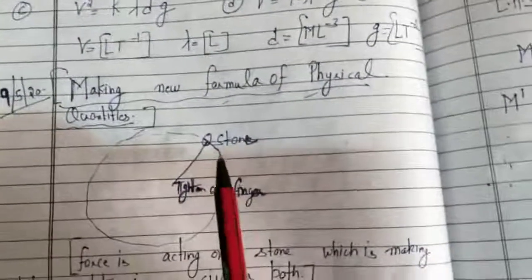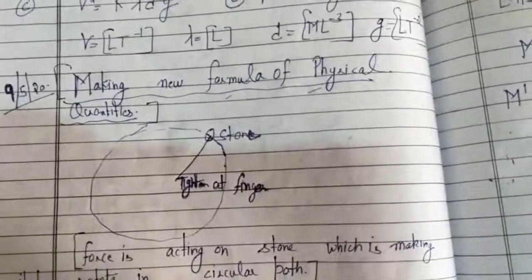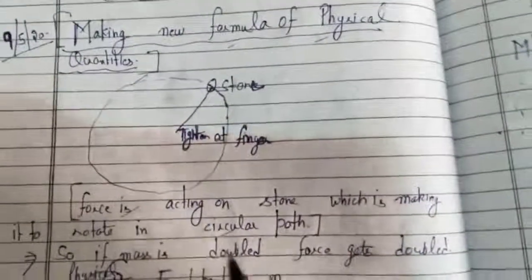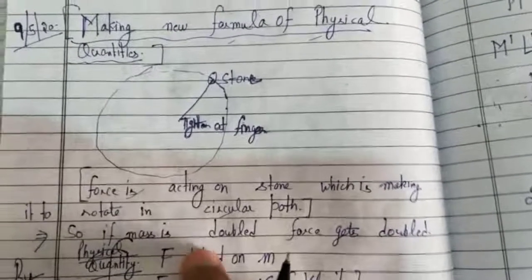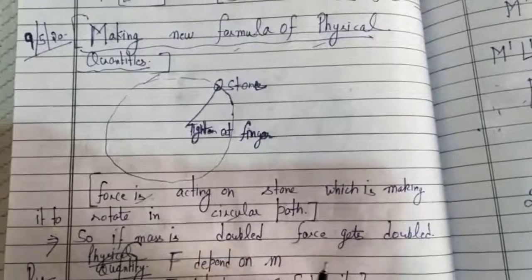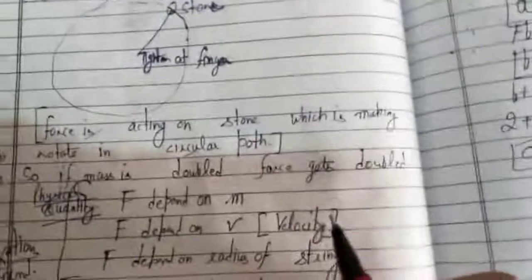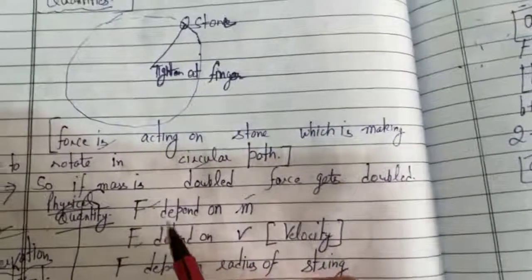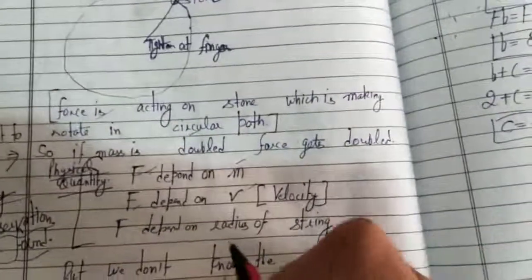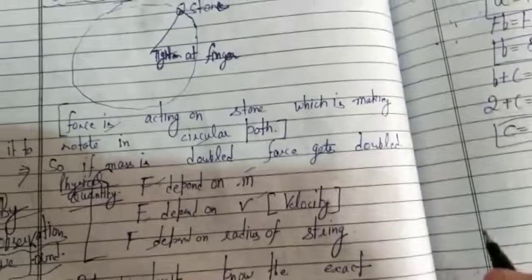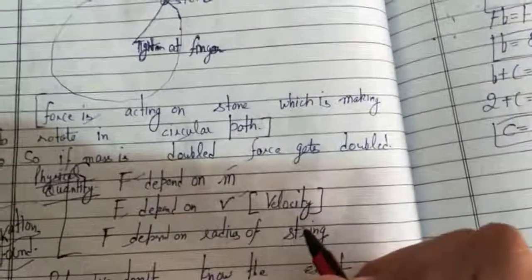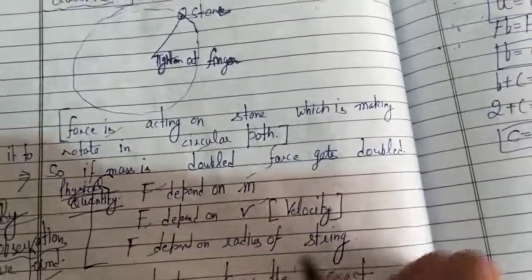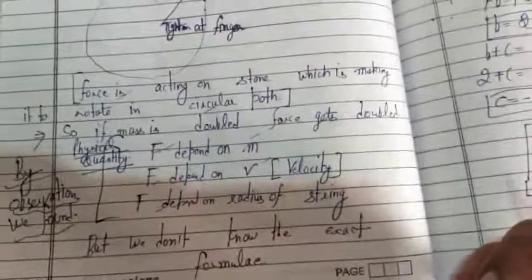Suppose a stone is tied with a thread and you are rotating it in a circular path. A force is acting on the stone — due to that force only, it rotates in a circular path. By observation, if you double the mass of the stone, the force gets doubled. So this central force depends on mass, depends on velocity, and depends on the radius of the string. But we don't know the exact formula.